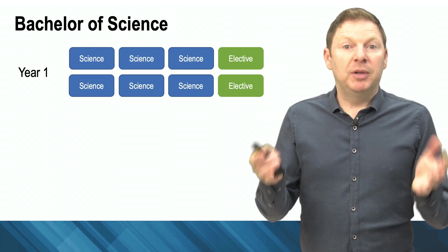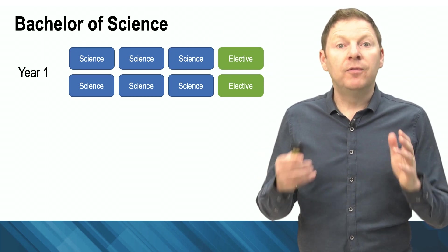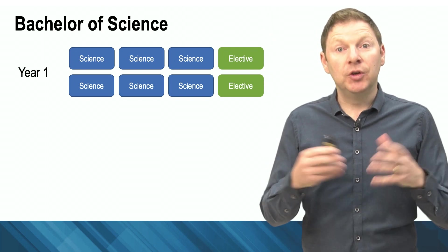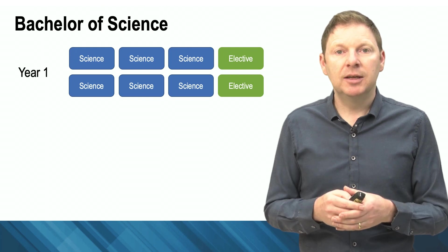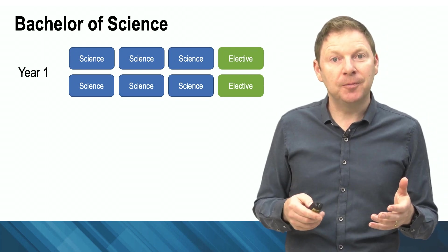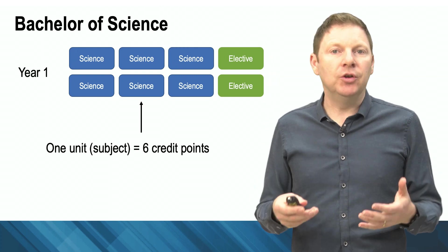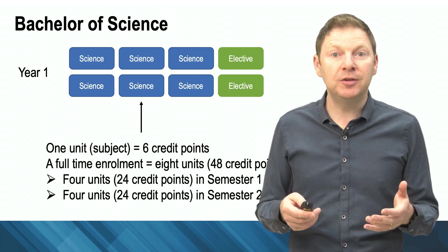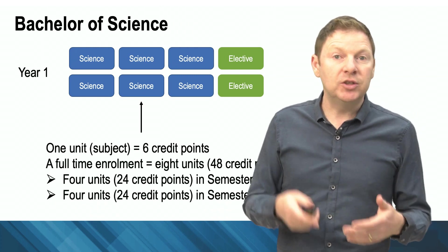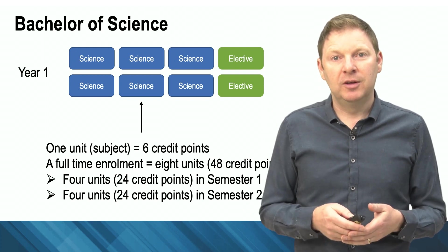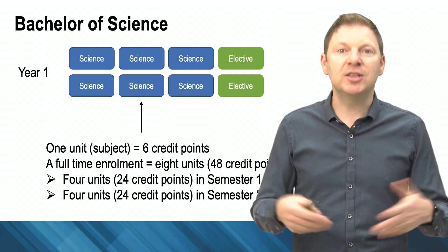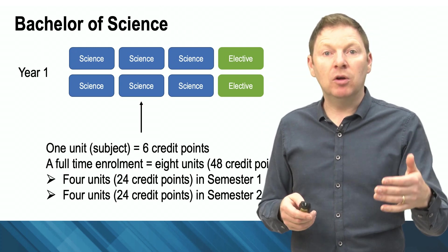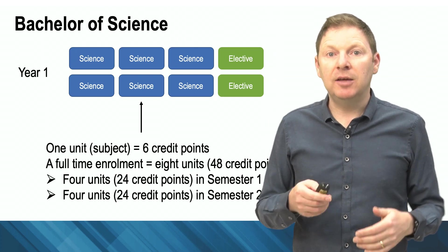Here is a road map of what the first year of your course is going to look like. You can see we've got some subjects or units as we call them which are science subjects, and there's also the opportunity to do some electives. Each of these units is worth six credit points, so in a calendar year if you're a full-time student you will do eight of these, which is 48 credit points. In the first semester you'll do 24, in the second semester you'll do another 24. Now as a new student you must enroll full-time. You can adjust that later if you need to.